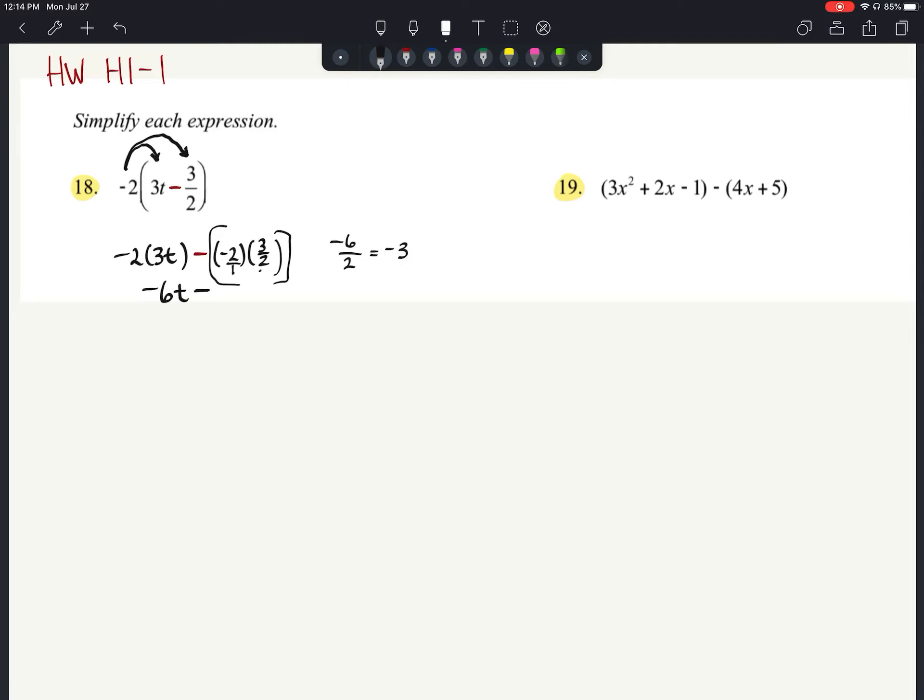So I think my brackets got a little big there. So I've got negative 6t minus a negative 3, which is correct, but we could simplify that a little bit more. Let's just go ahead and say negative 6t plus 3. And that is our answer.